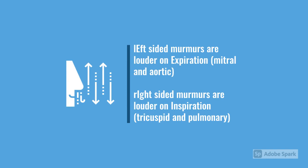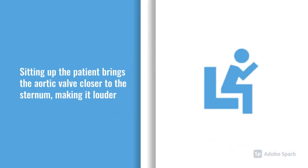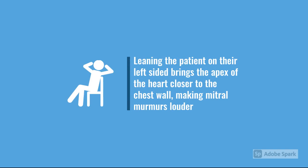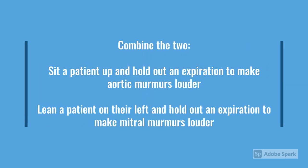Regarding patient positioning: sitting a patient forward brings the heart closer to the sternum, so the aortic valve moves forward and makes an aortic murmur louder. Leaning the patient to the left side brings the apex of the heart closer to the chest wall, which makes mitral murmurs louder. So if you're unsure whether it's a mitral or aortic murmur, those postural techniques can help you differentiate. You can also combine breathing techniques and positional manoeuvres.